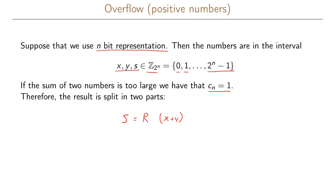...and the other part, called overflow (OV), which equals the last carry bit cn. If cn is 0, there is no overflow; if cn is 1, we have an overflow, meaning the sum is a number outside the representable range.